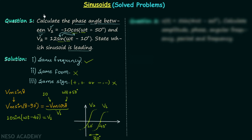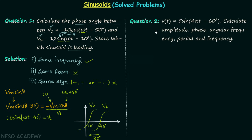That is all for question number 1. Now we move on to question number 2. V(t) = 5·sin(4πt - 60°) is our signal, and we are required to calculate the amplitude, phase, angular frequency, period, and frequency of this signal.